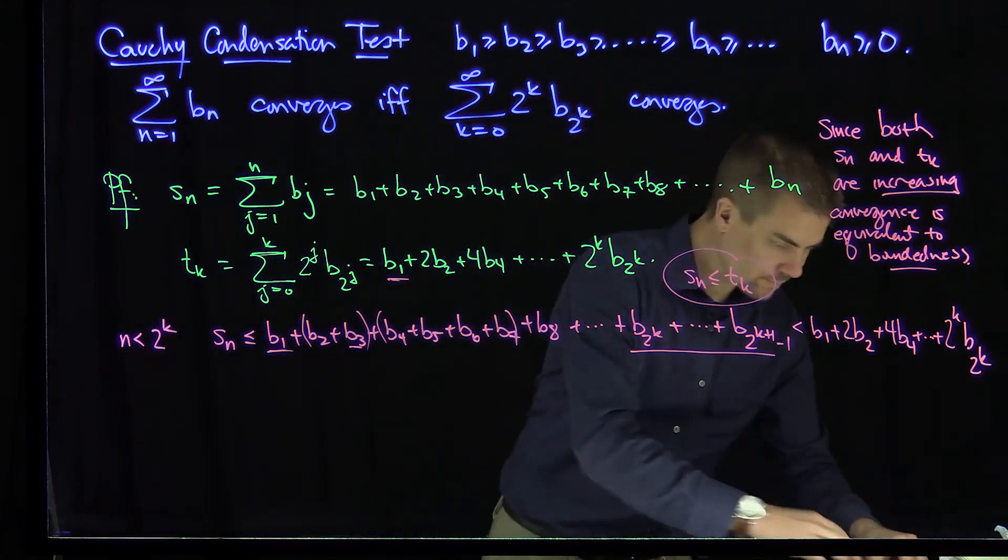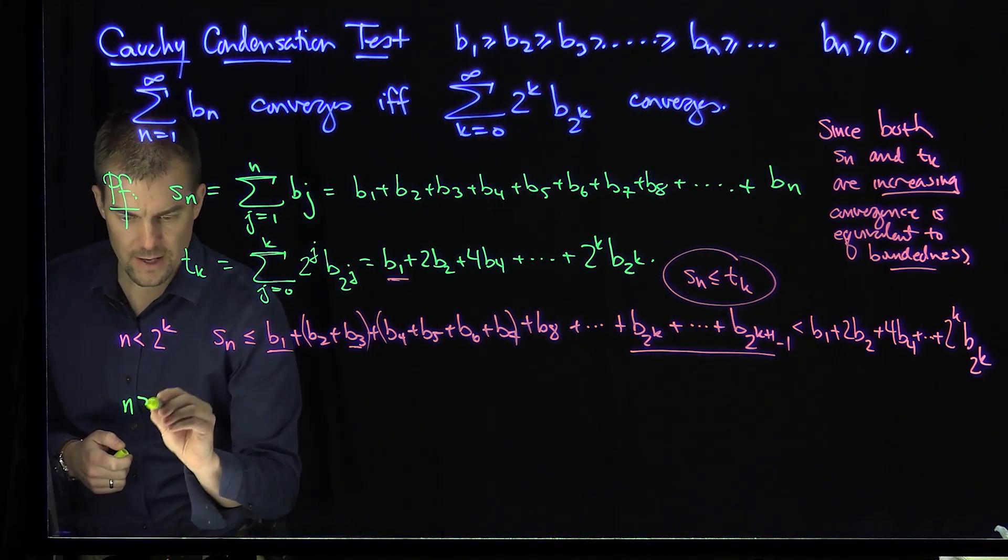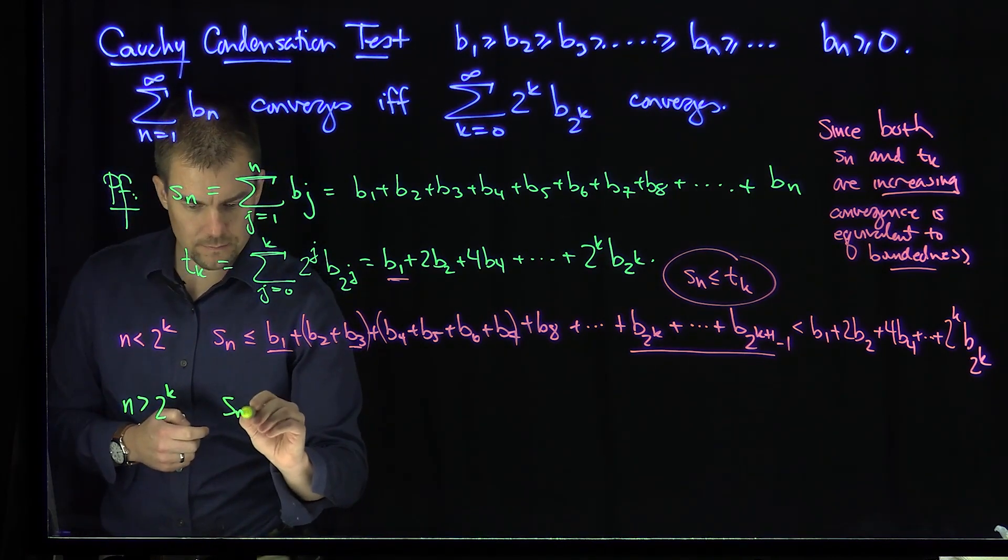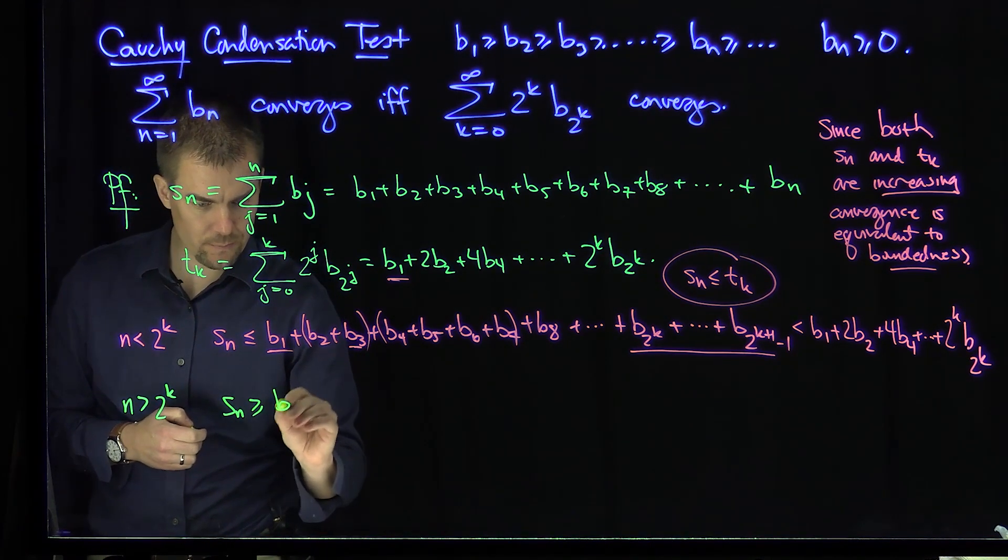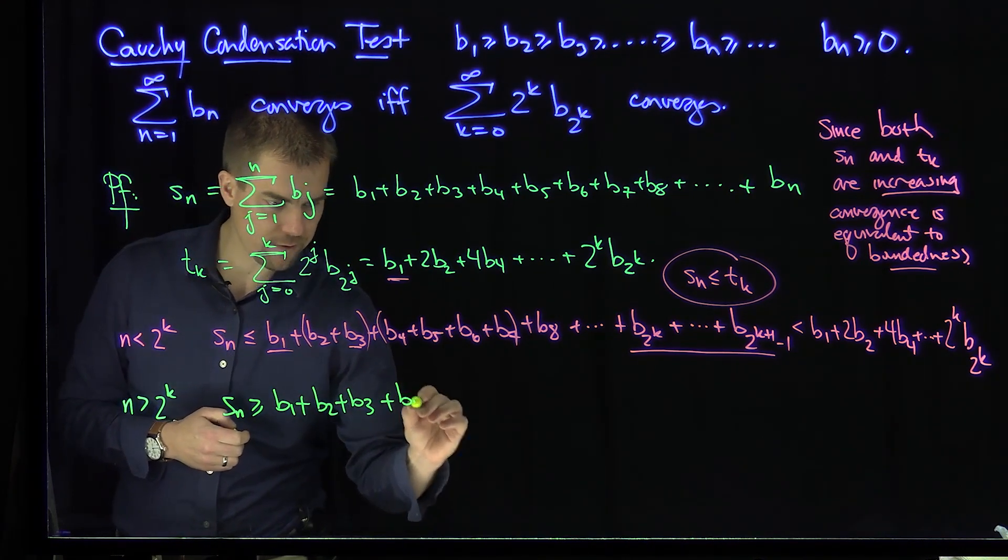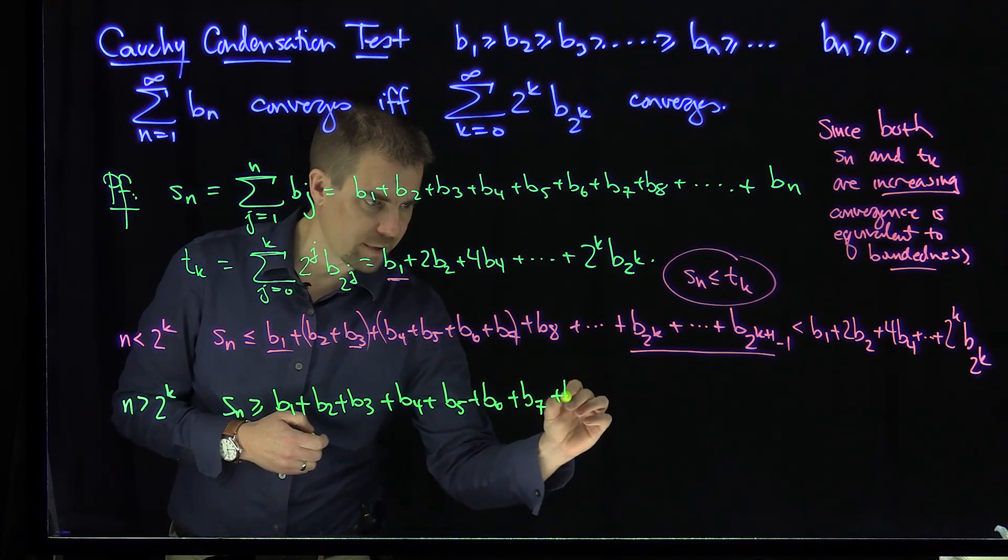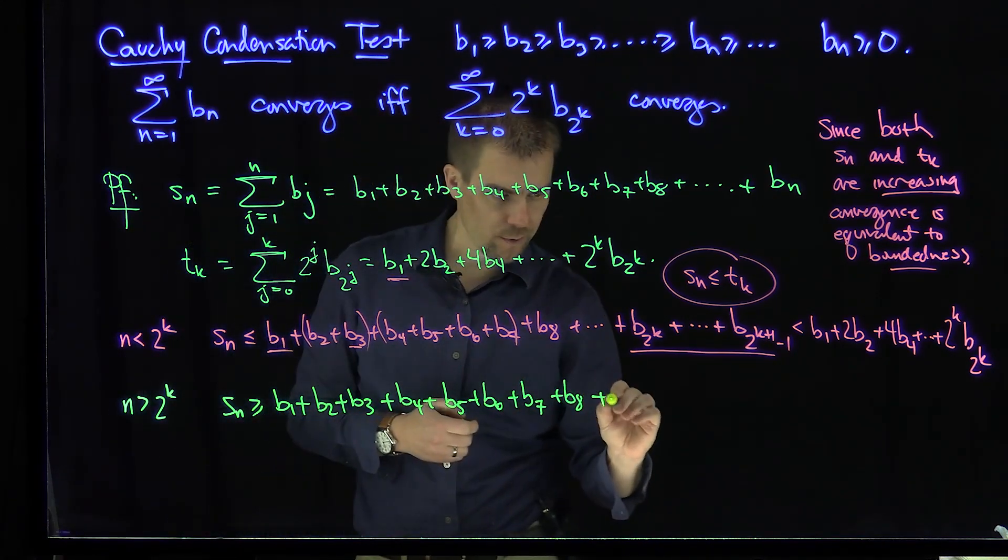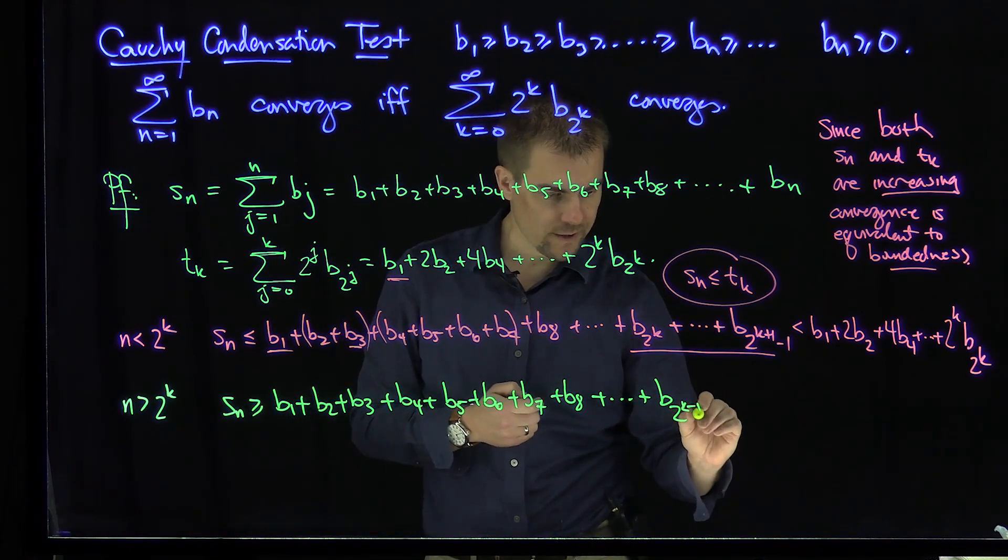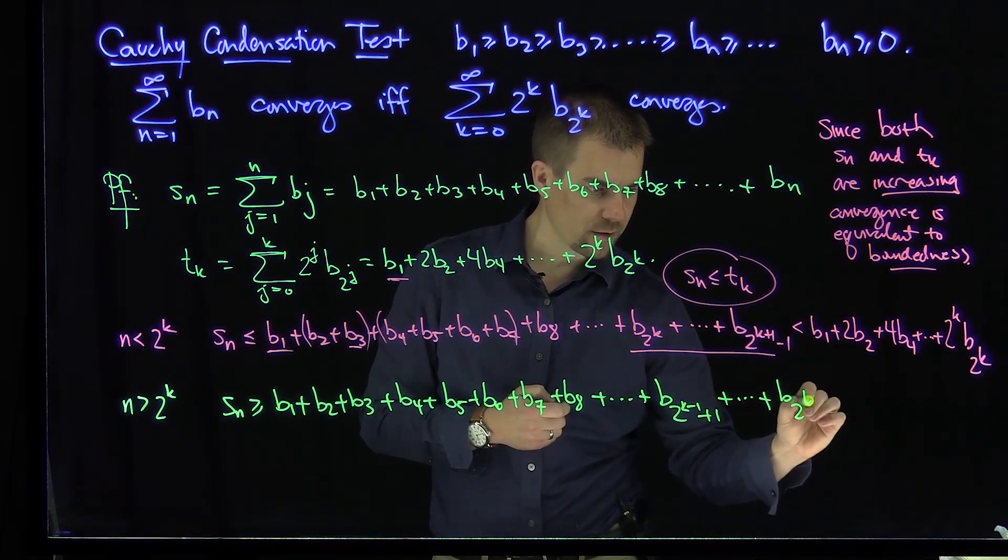Now in the other direction, in the case when n is bigger than 2 to the power of k, we'll say that Sn is bigger than or equal to B1 plus B2 plus B3 plus B4 plus B5 plus B6 plus B7 plus B8, all the way down to B to the 2k minus 1 plus 1, all the way down to B to the power of 2k.